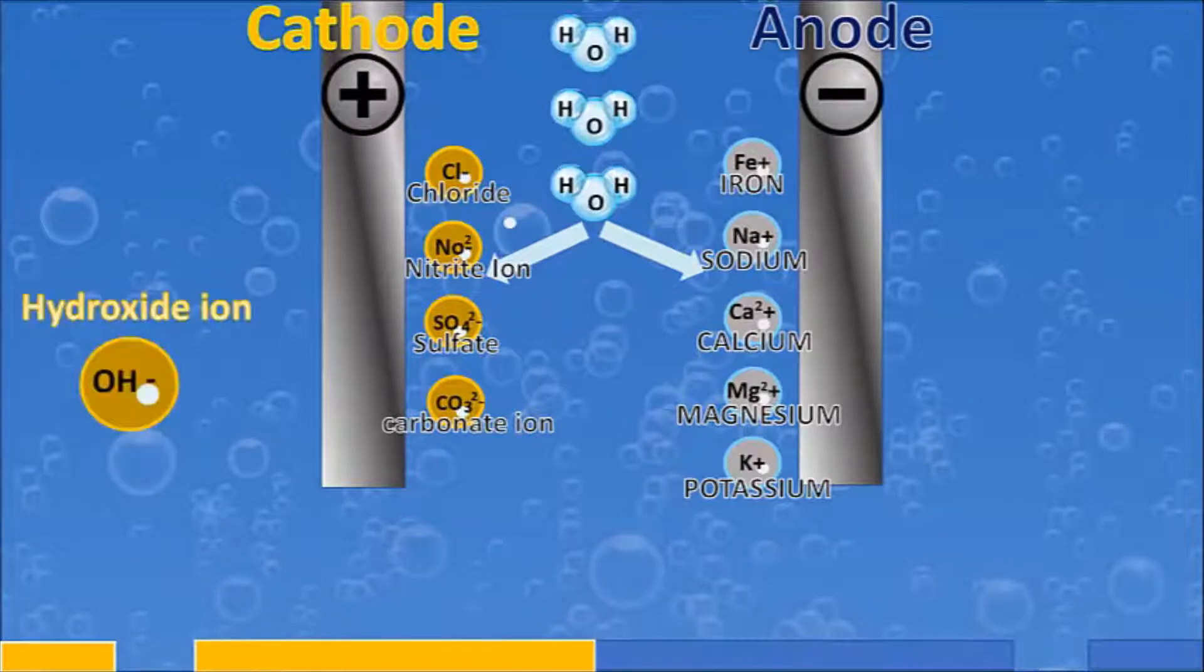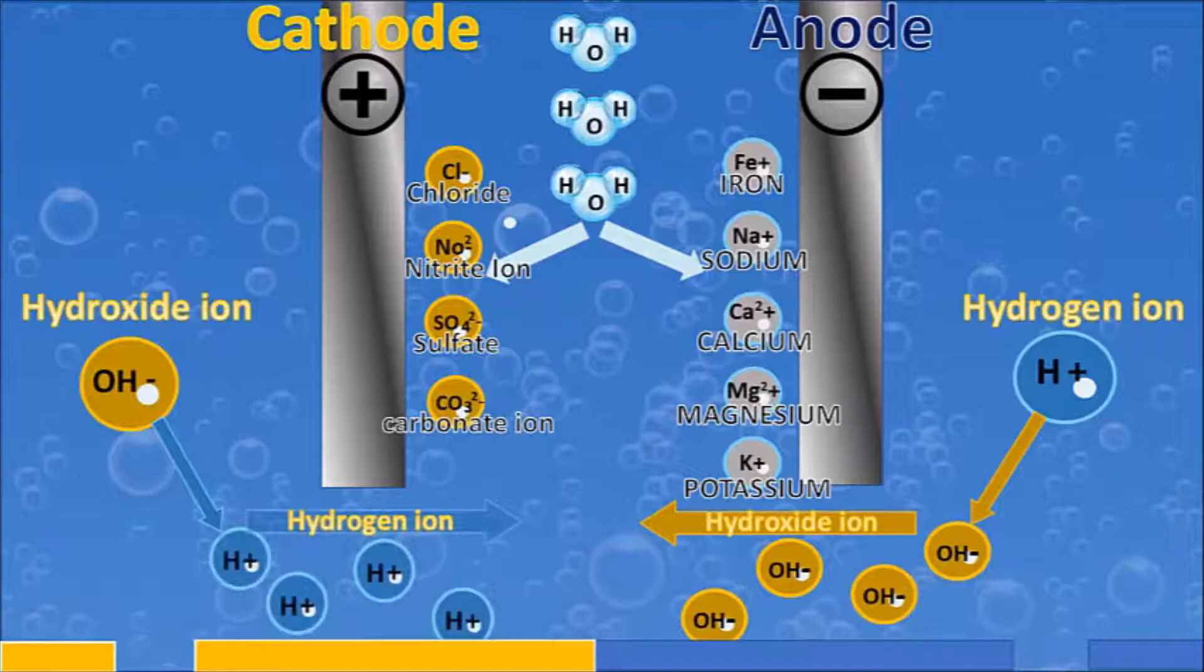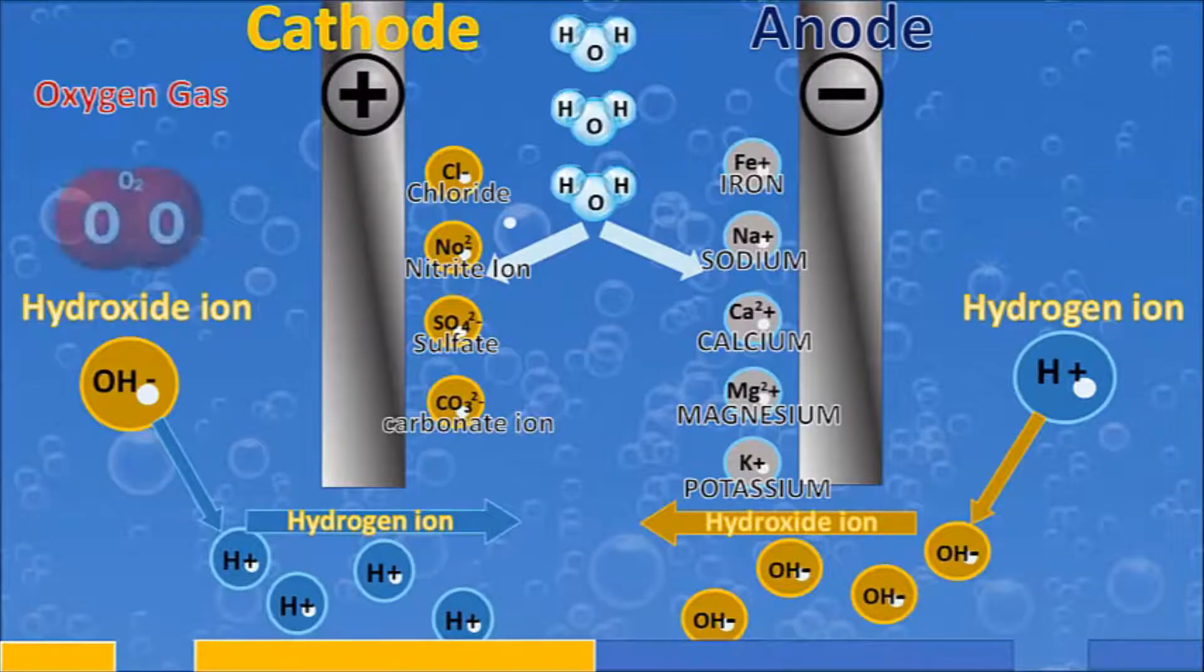We're creating a hydroxide ion and on the other side we're creating a hydrogen ion. How this happens is the hydroxide ion gets released with the charge, so we're splitting the H2O on this side and on the other side. To create this hydroxide ion, we're releasing the hydrogen ion.